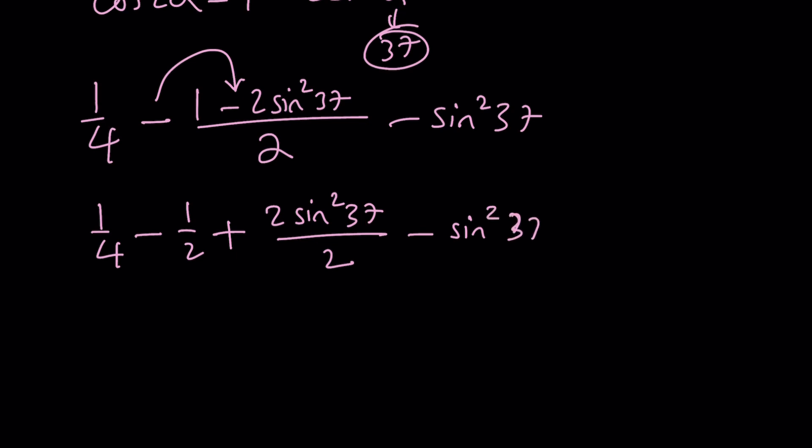And then finally minus sine squared 37. Now notice that this is the same as sine squared 37. They're canceled out. One fourth minus two fourths is negative one fourth. And then we get the same result one more time, which should not be a surprise because we're solving the same problem.